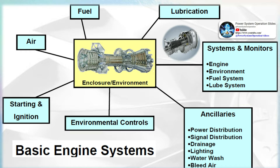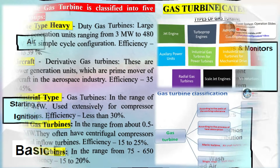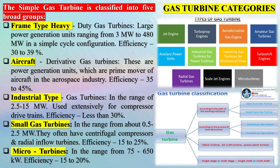The combustion gas turbines being installed in many of today's natural gas-fueled power plants are complex machines, but they basically involve three main sections. The compressor draws air into the engine, pressurizes it, and feeds it to the combustion chamber at speeds of hundreds of miles per hour.